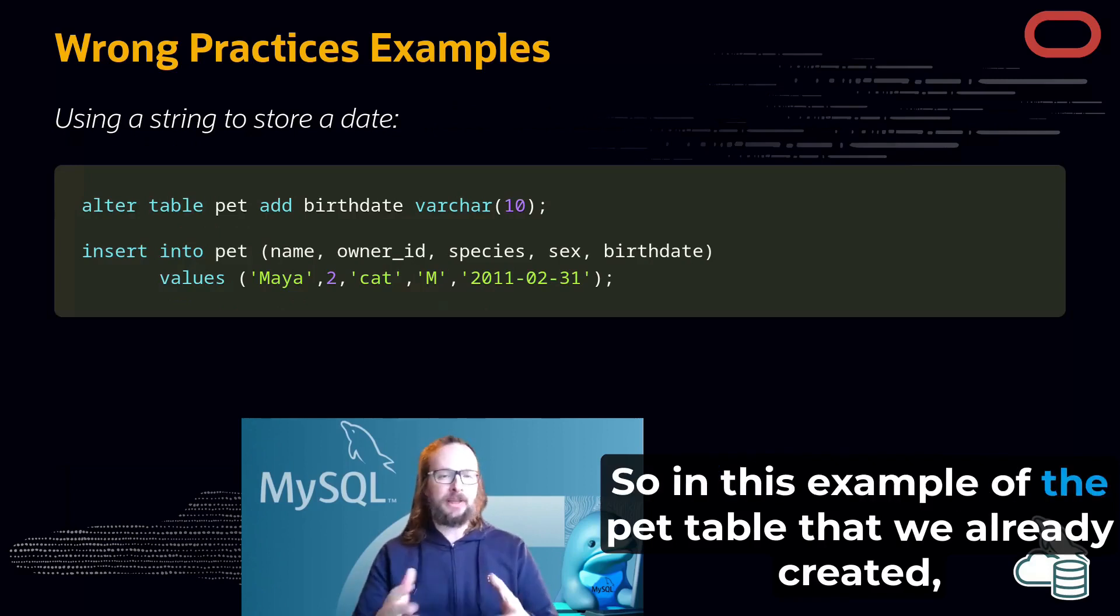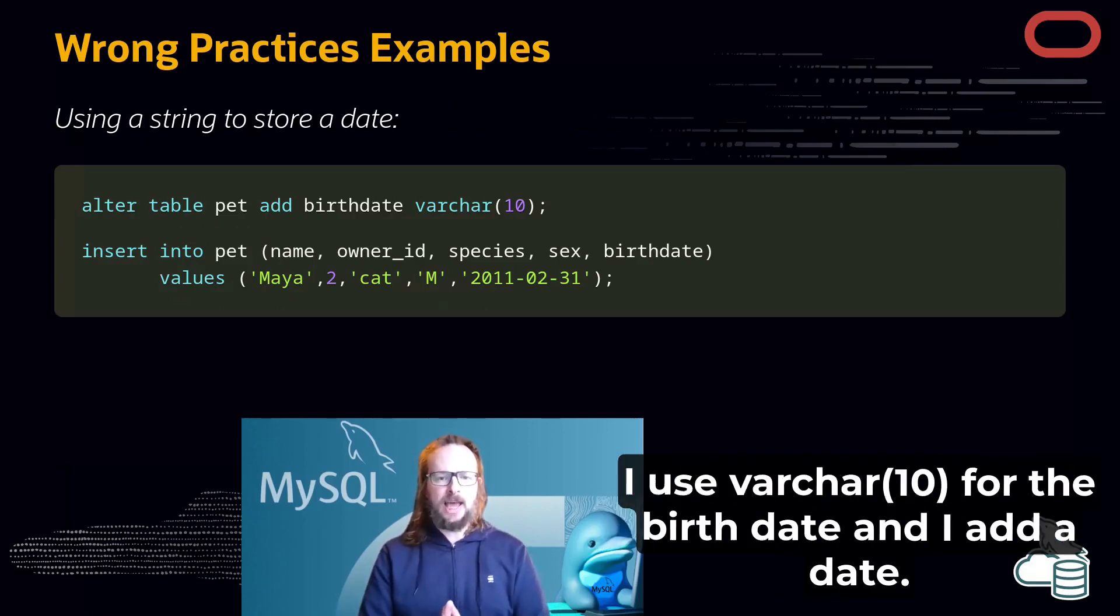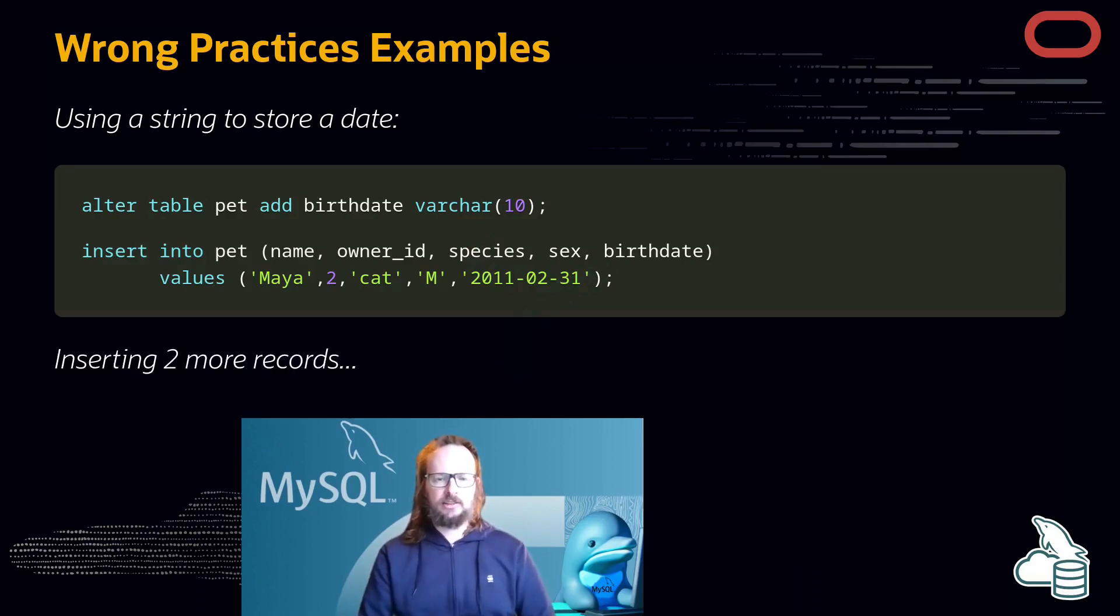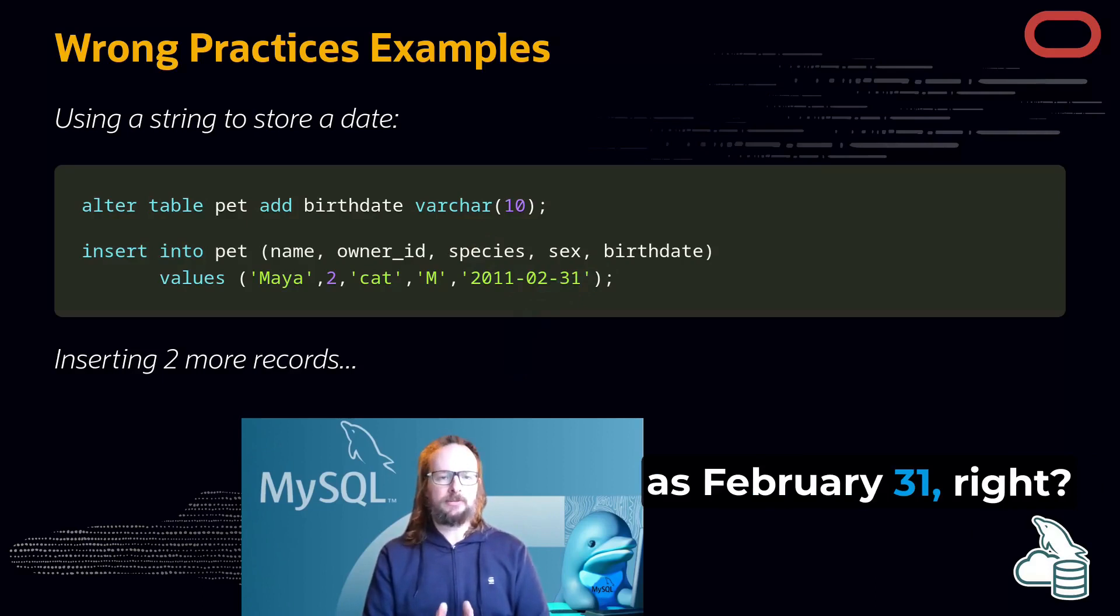In this example of the pet table that we already created, I use varchar 10 for the birthday and I add a date. As you can see, for this pet Maya, I was able to create the birth date as February 31, right?